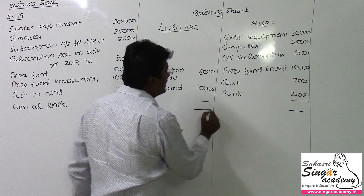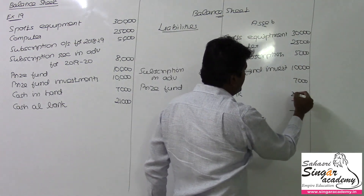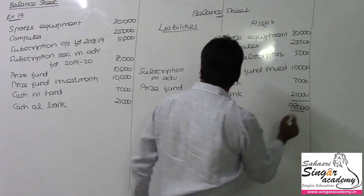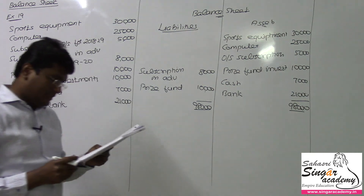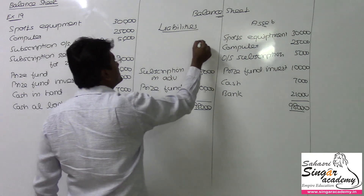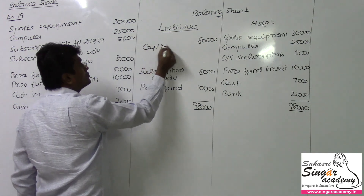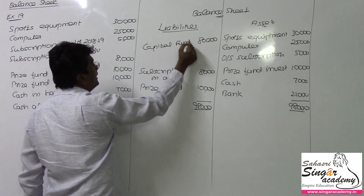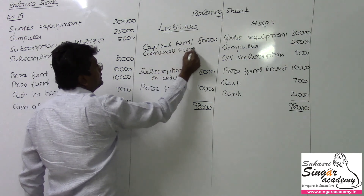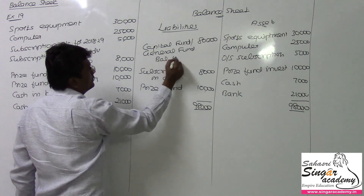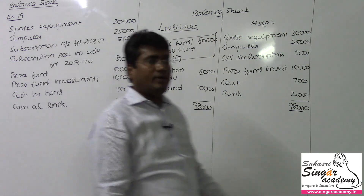Now I will find out the balance here. The total comes to 98,000 rupees. After subtracting, 80,000 rupees is the final answer — the balancing figure is 80,000. This is named as either capital fund, general fund, or accumulated fund. This is nothing but the balancing figure — general fund. I box it to show that we have found out this value.